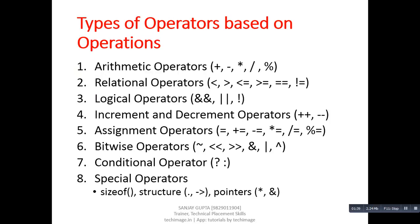Next is types of operators based on operations. Based upon operations, there are total eight categories. The first is arithmetic operators. It contains plus, minus, multiply, divide, and modulus. So in case of arithmetic operators, there are total five symbols through which we can perform any arithmetic operation.